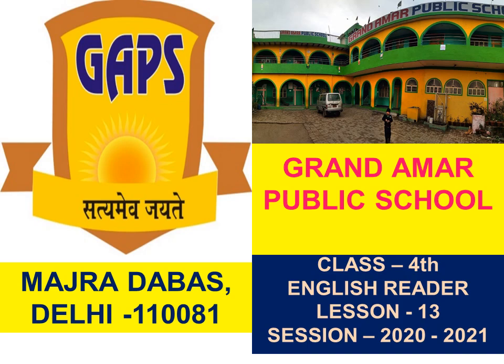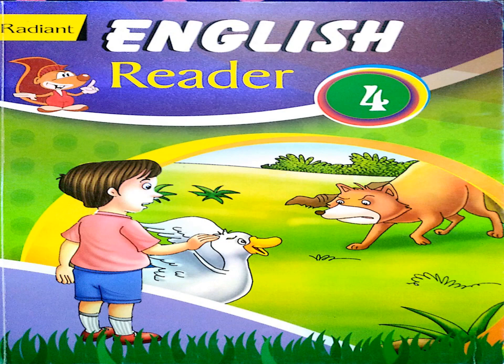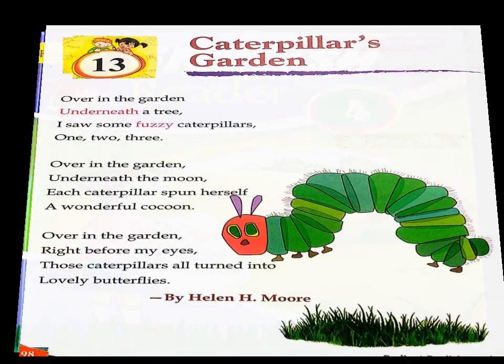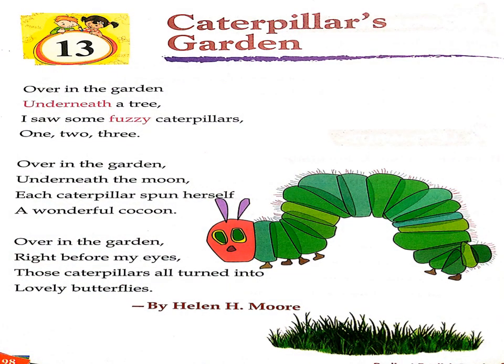Hello Class 4, this is your English Reader subject and your lesson number 13. As you can see, this is your English Reader book — all of you open your books now. Your lesson number 13 is 'Caterpillar's Garden.' You can see caterpillars on the screen — you can see a lot of caterpillars in a garden.